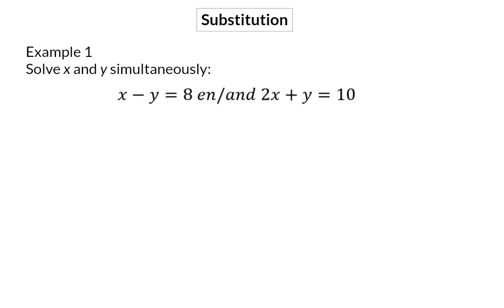Example 1. Solve x and y simultaneously. In the previous video, we had a look at how to approach this question using elimination. Today, we're going to have a look at substitution. In the substitution method, your first aim is to get one of the variables in one of the equations alone on one side — to make it the subject of the equation.